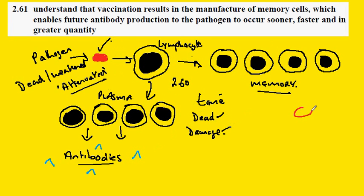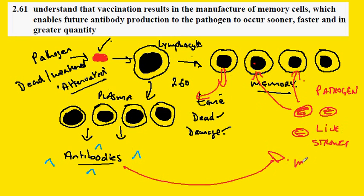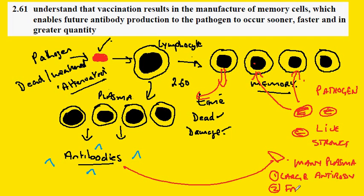Next time, when the person encounters the pathogen for real — so this would be the live and strong pathogen — it would be quickly picked up by the memory cells and may even be eliminated by the antibodies which are already present. The memory cells would each divide to form a clone of plasma cells, so we would get many plasma cells, which would produce large amounts of antibody very fast. So fast that this dangerous pathogen cannot cause death or damage. That is vaccination.